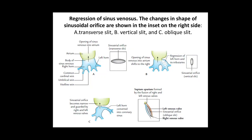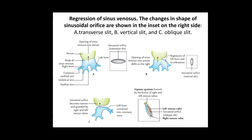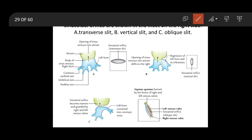Hello everyone, today I will tell you about development of the atrium, first of all about the right atrium. We have seen this diagram in the last class: this is the sinus venosus, and in the sinus venosus there are two horns — the right horn and the left horn. In both horns, three tributaries are draining: the common cardinal vein, umbilical vein, and the vitelline vein.